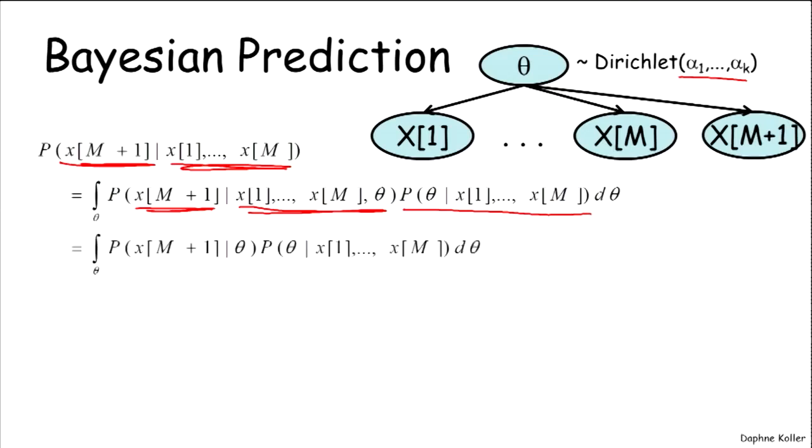Well, one thing that immediately follows is because of the structure of the probabilistic graphical model here, we have that xm plus 1 is conditionally independent of all of these previous x's given theta.